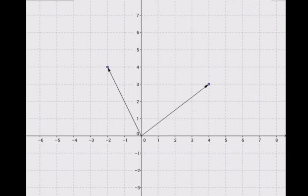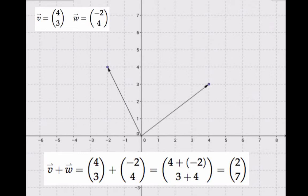We define the sum of two vectors as the sum coordinate-wise. So to get the sum of these two vectors, we add up their two x-coordinates. So 4 and negative 2 add up to 2. And our two y-coordinates, which are 3 and 4 respectively, add up to 7. So our vector sum is the vector from 0, 0 out to 2, 7.